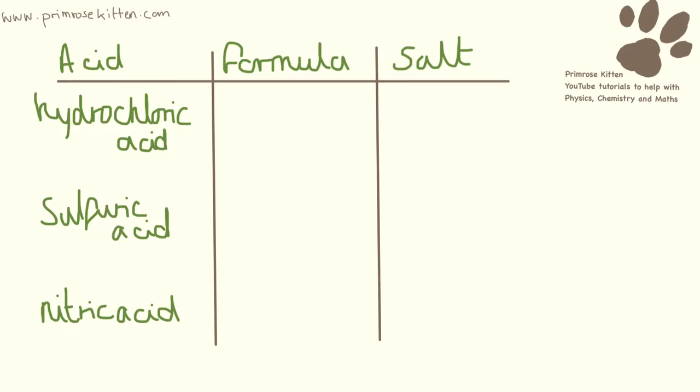Hydrochloric acid, formula HCl. Sulfuric acid is H2SO4, and nitric acid is HNO3. Hopefully what you've all noticed is that all of these start with H. That's the bit that actually makes it acidic.